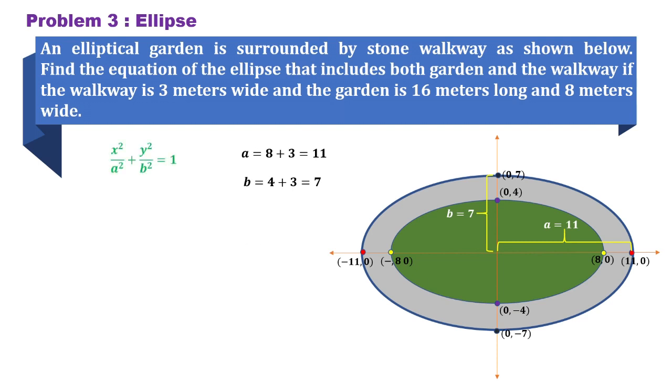Looking at the illustration, we're going to use the standard form of the equation of a horizontal ellipse centered at the origin. By substitution, we can have x squared over 121 plus y squared over 49 is equal to 1.